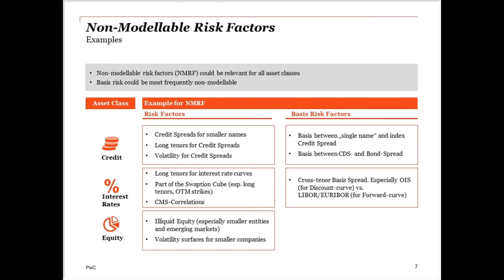To illustrate this principle, we provide some examples of risk factors and basis risk factors — basis risk factors being the result of the decomposition of a risk factor between a principal component and a basis risk. Non-modelable risk factors can be relevant for all asset classes. For example, for the credit risk asset class, a credit spread for smaller names, long tenors of credit spreads, or even volatility of those spreads could be deemed non-observable and therefore non-modelable. The same applies to parts of the swaption cube of interest rates or CMS correlation parameters. Industry expects that most basis risks will not qualify for the modelability criteria and will be treated as non-modelable risk factors.